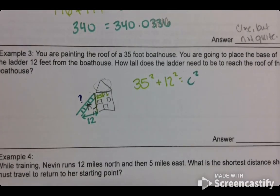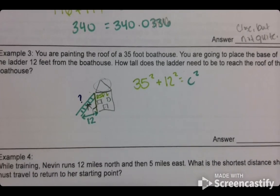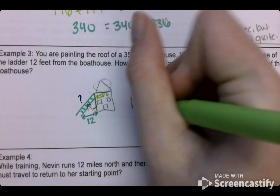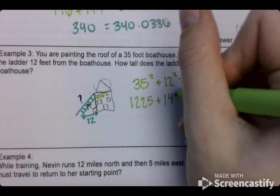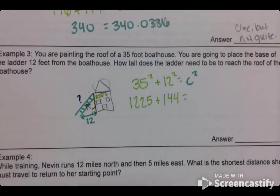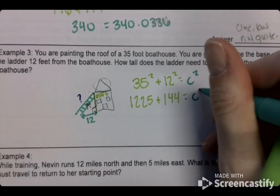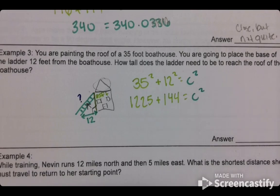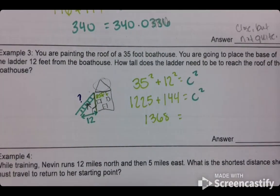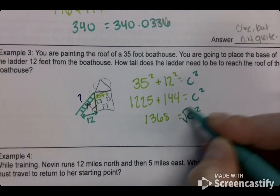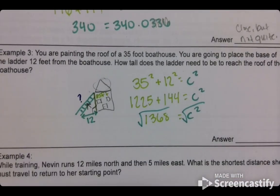So 35 squared, I have no idea what that is. That's a very big number. 1225. 12 squared, we know. And then obviously we're solving for C. So there's that. So the first two, we are given it. We are seeing if they're right angles. This one, we're actually solving. So 1225 plus 144, 1368. And then we're going to take the square root of that.